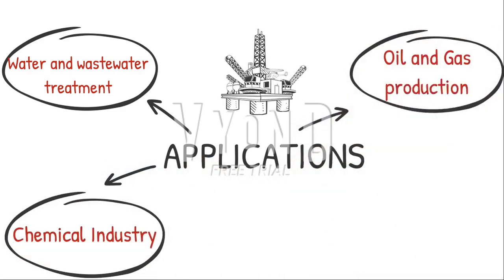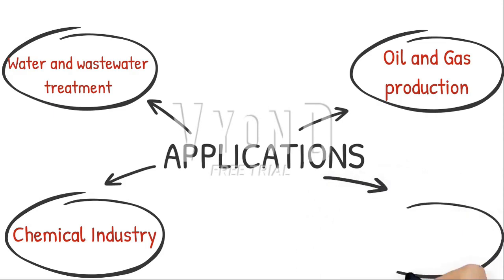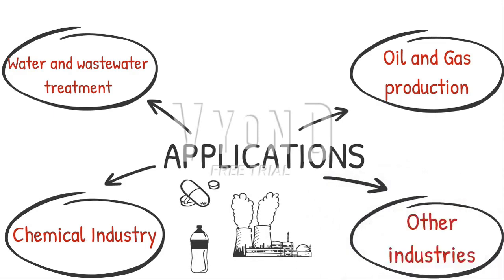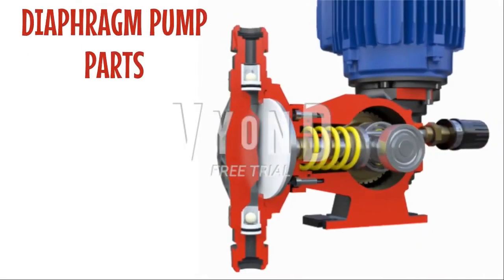They can reliably inject methanol, corrosion inhibitors, and other corrosive materials in the hardest conditions and most isolated places, making them perfect for onshore oil and natural gas production. These pumps can also be used in pharmaceuticals, power generation, and the food and beverage industry. Let's now list the parts that make up this pump.